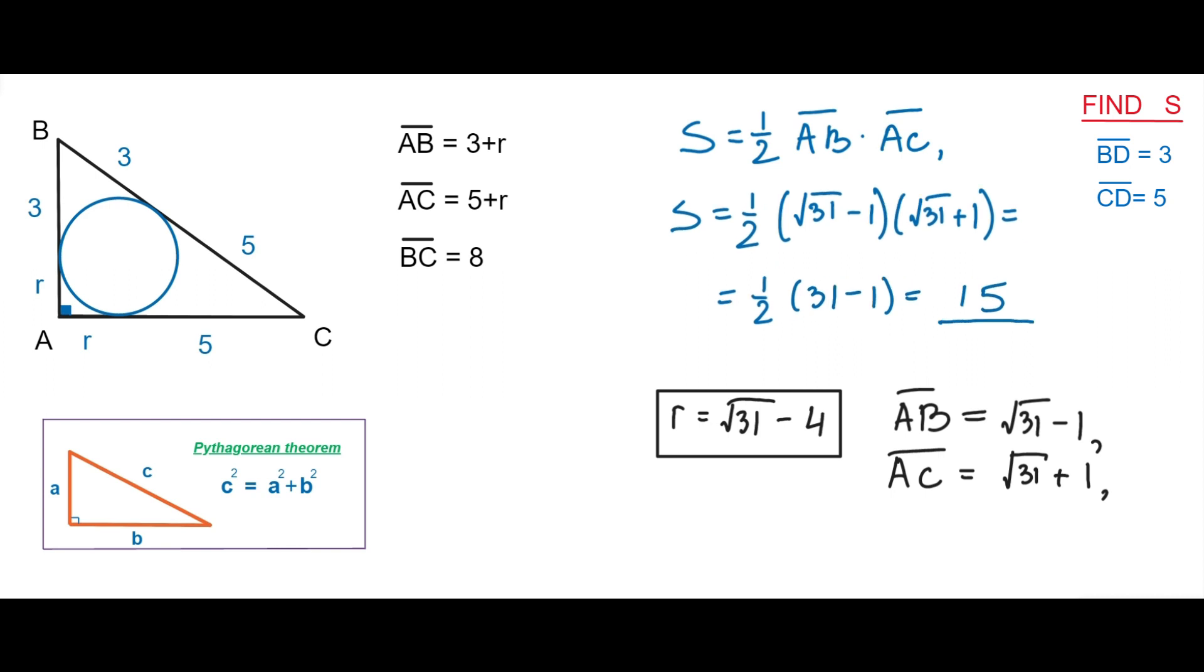So the area of a right triangle is equal to 15. Thanks for watching, bye!